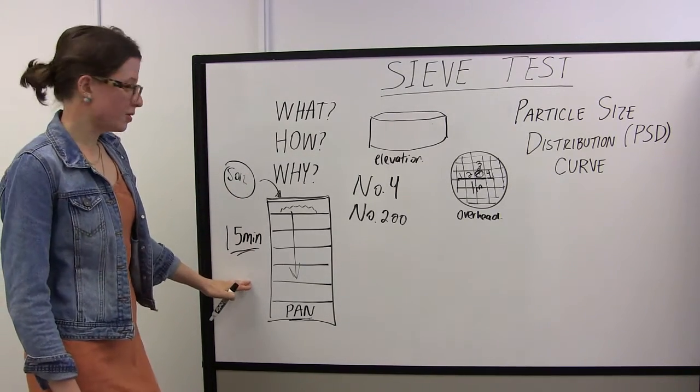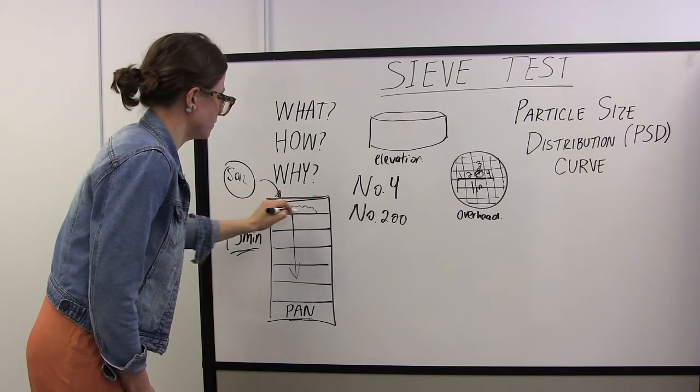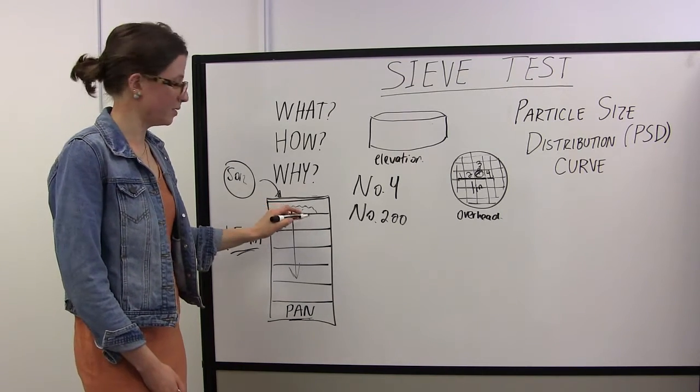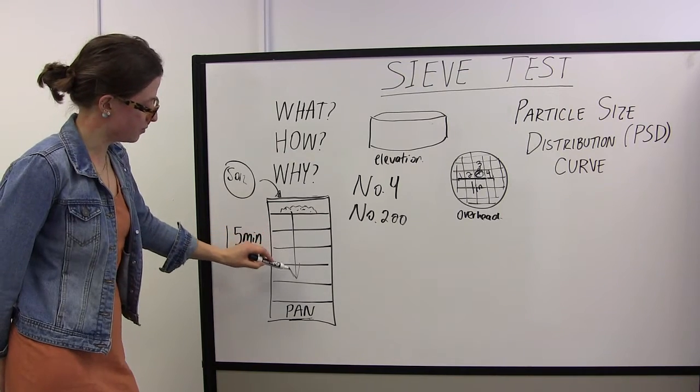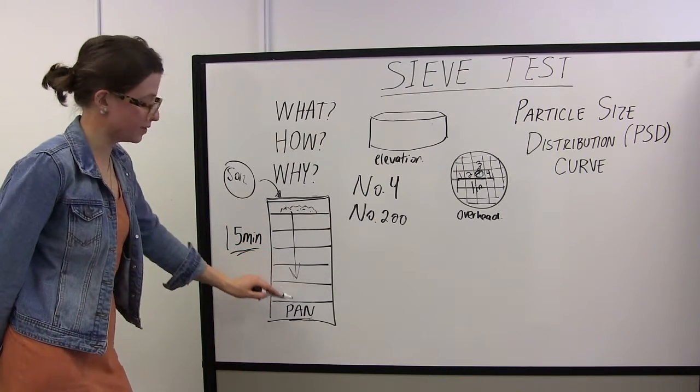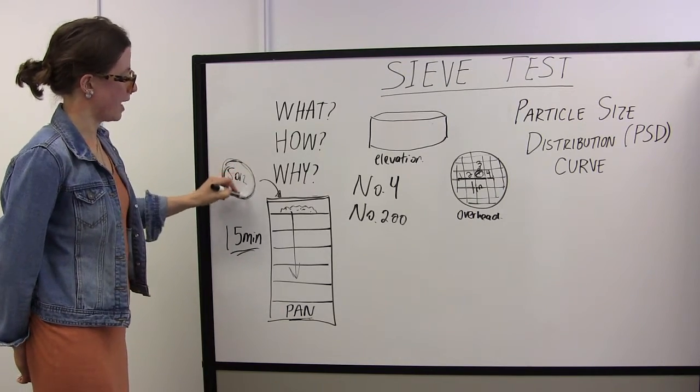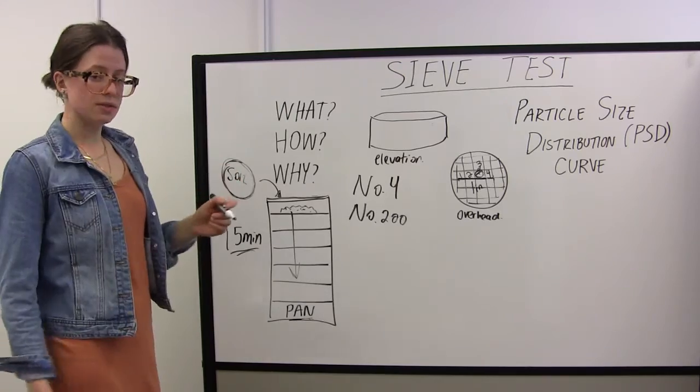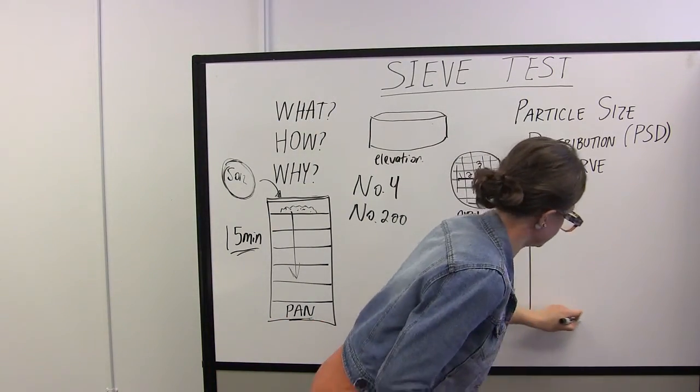Fifteen minutes are up. Now we're ready to start crunching the numbers. You first want to individually weigh all of these sieves with the portion of your soil specimen that's retained on it. The sum of the material that's retained on all these sieves and in the pan makes up the total weight of your soil specimen at the start. Doing a few calculations, you get to what we're really after with this test, which is the particle size distribution curve.